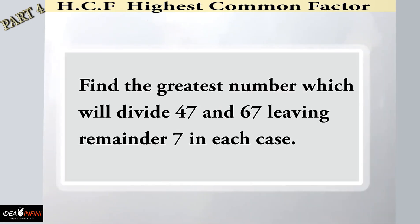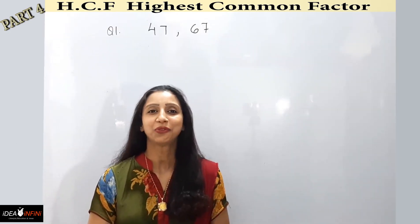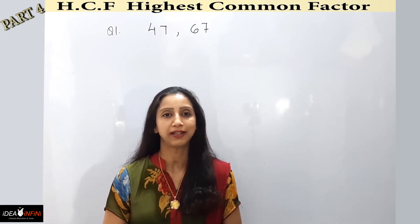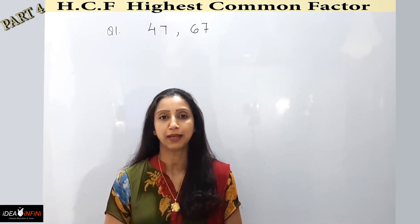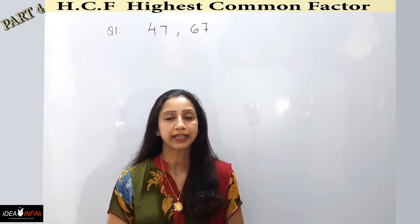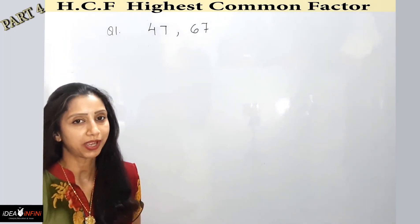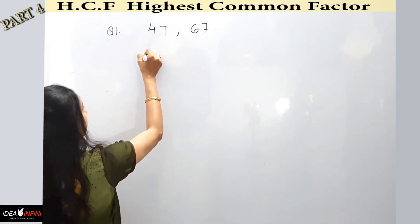Let's see the first example: find the greatest number which will divide 47 and 67, leaving remainder 7 in each case. I have two numbers — 47 and 67 — and I need to find the biggest number which divides both but leaves a remainder of 7. My first step will be to subtract 7 from both these numbers.